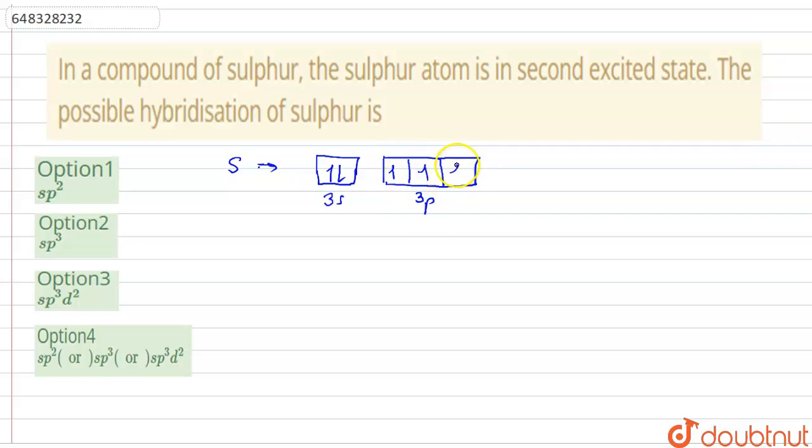One, two, three, and four. So this is the outer electronic configuration of sulfur atom, normal sulfur atom, which is not in the excited state. Now we will draw the outer electronic configuration of this sulfur atom when it is in second excited state.